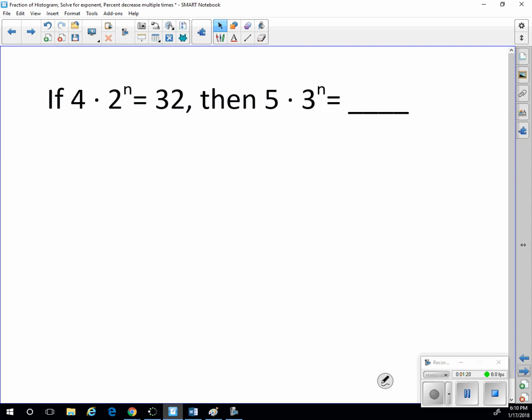If 4 times 2 to the n equals 32, then 5 times 3 to the n equals what? Well, to solve for n, one way to do that would be to divide this whole side by 4, and divide that side by 4.